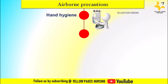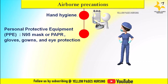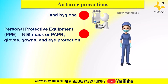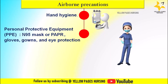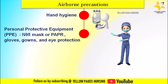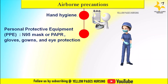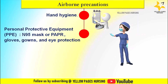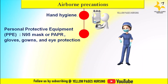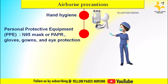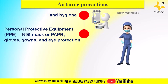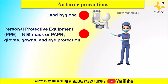The next precaution is personal protective equipment, or PPE. This includes wearing a properly fitted N95 respirator or powered air-purifying respirator. Perform a fit check before entering an area, along with gloves, gowns, and eye protection when caring for patients on airborne precautions. Gloves protect hands from contamination, gowns cover the body to prevent direct contact with infectious materials, and eye protection such as goggles or face shields shields the eyes from respiratory droplets.